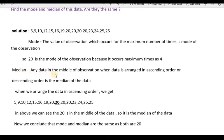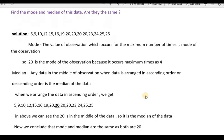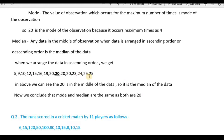Now for the median — any data value in the middle of the observation, when data is arranged in ascending or descending order, is the median. We arrange the data in ascending order. There are 15 values, so 7 on either side, and in the middle is 20. So 20 is the median. We conclude that mode and median are the same, as both are 20.